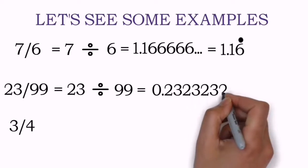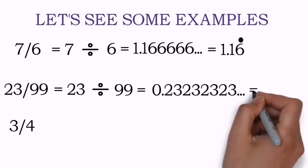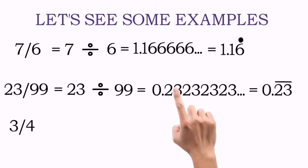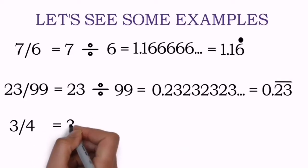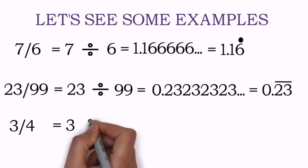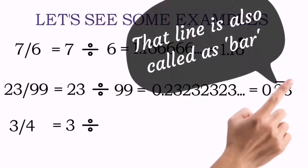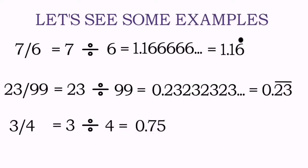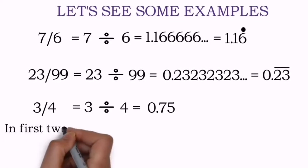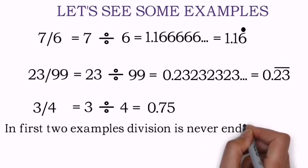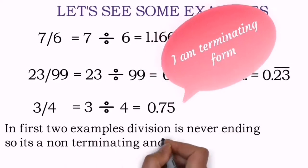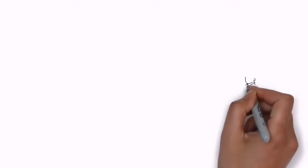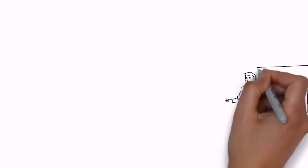The second one is 23 divided by 99. When you divide it, you get 0.232323... where 23 keeps on repeating itself. When two digits are repeating, we give a bar line over the numbers which are repeating. The third one is 3 divided by 4 — the division ends and the answer becomes 0.75. So the first two are non-terminating and the third is a terminating decimal form.